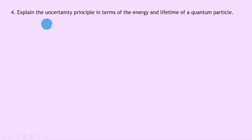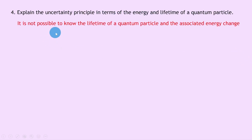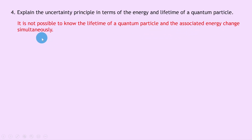Question 4 says to explain the uncertainty principle in terms of the energy and lifetime of a quantum particle. This is worded similarly to Question 1 but swapping position and momentum for energy and lifetime. We can say that it is not possible to know the lifetime of a quantum particle and the associated energy change simultaneously.